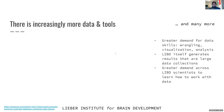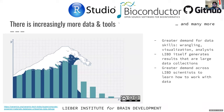In biology there's more and more data nowadays than there used to be — a lot of our experiments generate a lot of data. There's also a lot of software tools to use to analyze data. Overall there's a greater demand for data analysis skills: wrangling data, visualization, and analysis. The institute itself, Lever, generates a lot of results and large data collections that are sometimes difficult to explore. So overall there's a greater demand from scientists to learn how to work with data.